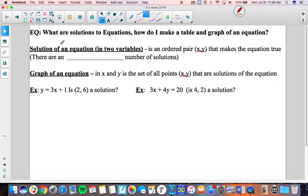So a solution of an equation in two variables, when we have an x and a y or an a and a b or any other two letter combination, a solution to an equation is an ordered pair that makes the equation true. By the way, if there are two variables, there are an infinite number of solutions if a solution exists.